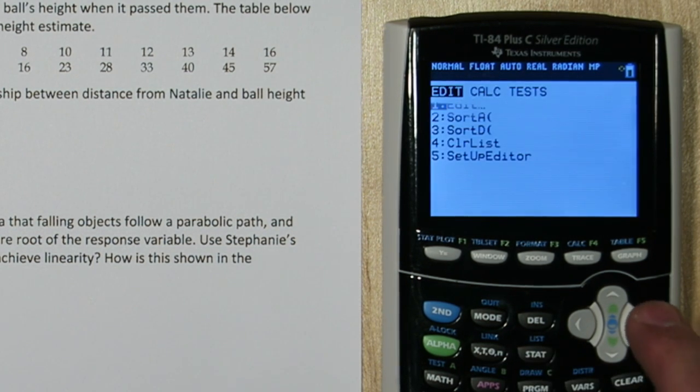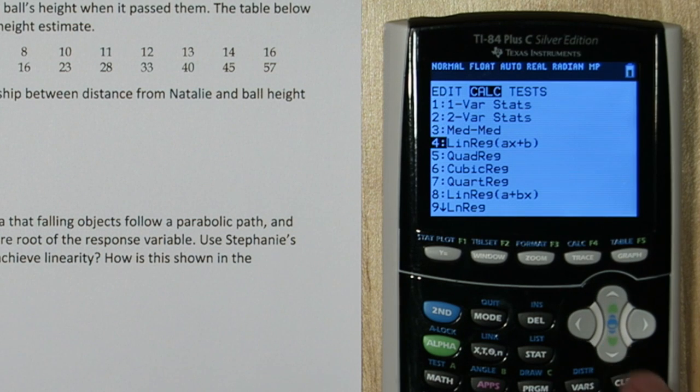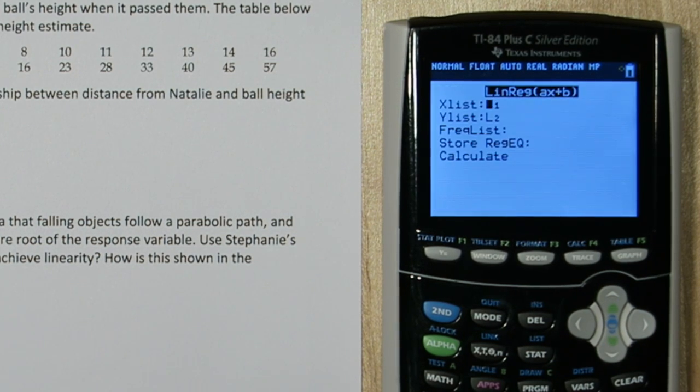Press stat again and go to calculate. Choose the linreg ax plus b option. We can leave list 1 as our explanatory variable and list 2 as our response variable.